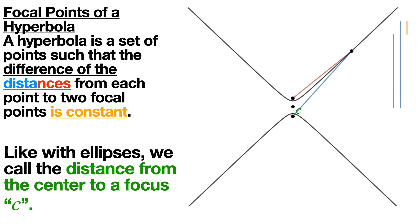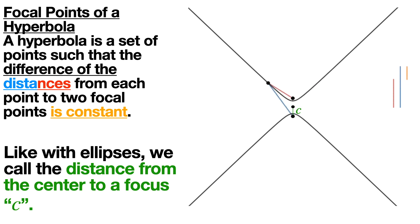No matter how big those two lines are, they will always subtract to get the same amount — the orange part — and we call the distance from the center to a focus c.